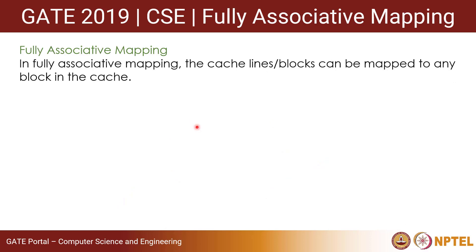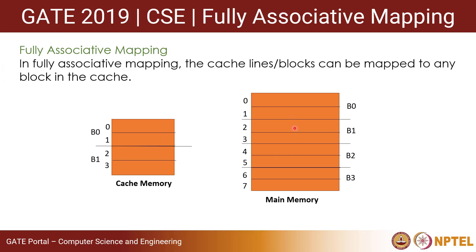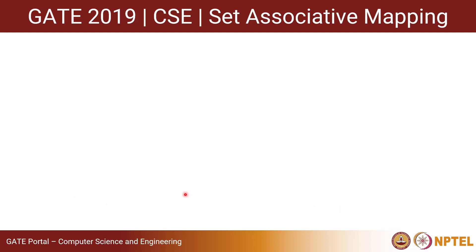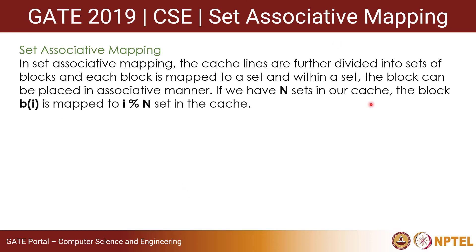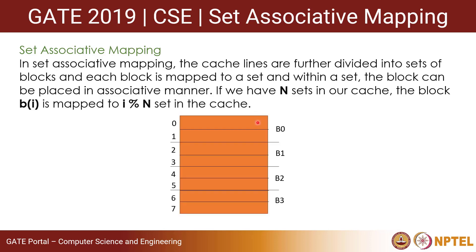In fully associative mapping, any block in the main memory can be mapped to any block in the cache. In set associative mapping, the cache lines are divided into sets of blocks. Each main memory block bi is mapped to the (i mod n) set in the cache, where n is the number of sets, and within that set, the block can be placed in any position.